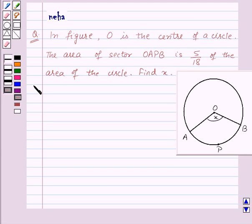Hi and welcome to the session. Let us discuss the following question which says in figure, O is the center of a circle. The area of sector OAPB is 5 by 18 of the area of the circle. Find X.